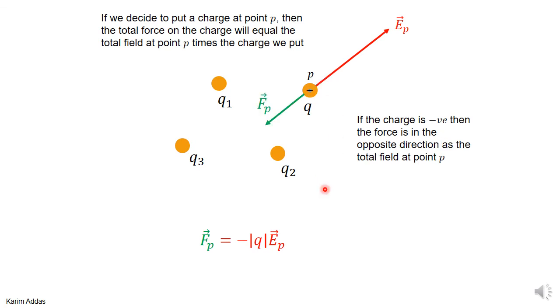If we choose to put a negative charge at point P, then the force will be the charge—in this case it's minus magnitude of q times E—so the force will be opposite the electric field, pointing in this direction.